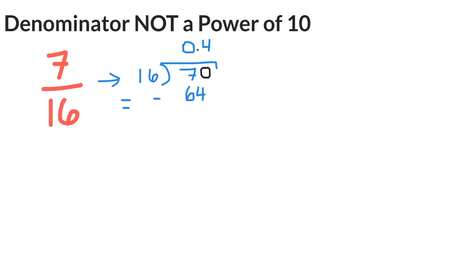4 times 16 is 64, so we have a remainder of 6. Since 16 can't go into 6, we'll add another zero. Now we can see that 16 goes into 60 three times, since 3 times 16 is 48, leaving us with a remainder of 12.